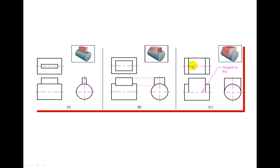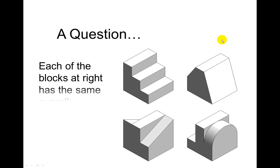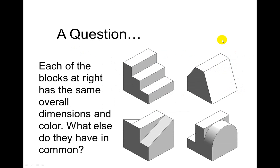And basically they are still, it's the little box on top gets larger and larger, but notice how my center lines are still staying the same. So each of the blocks at the right has the same overall dimensions and color. What else do you have in common? Look at each of these and think about that.